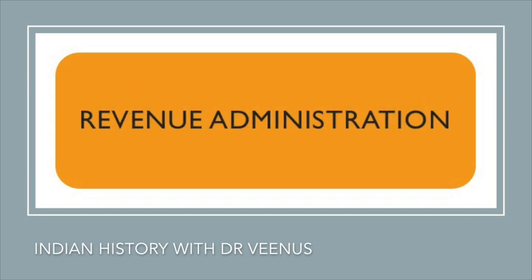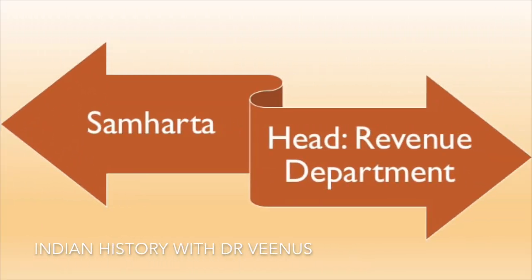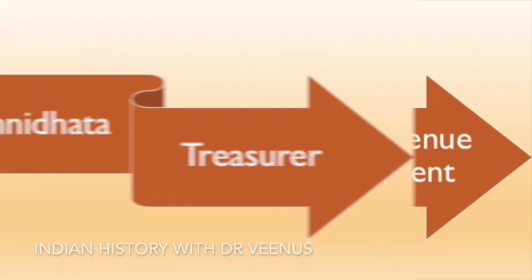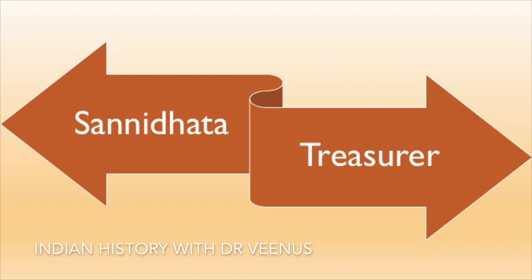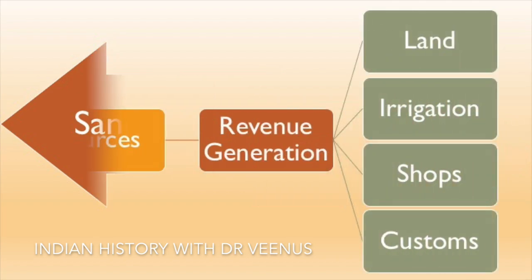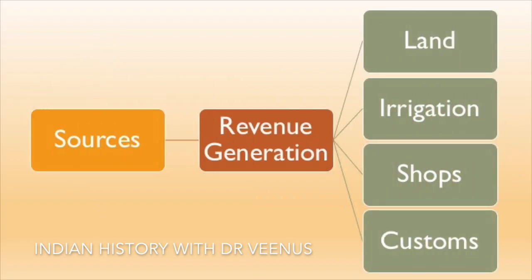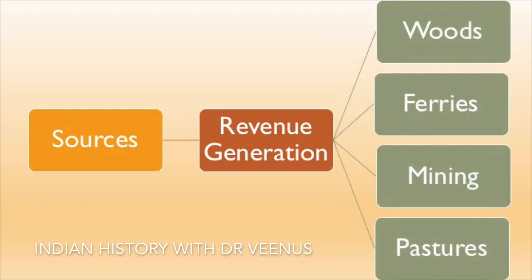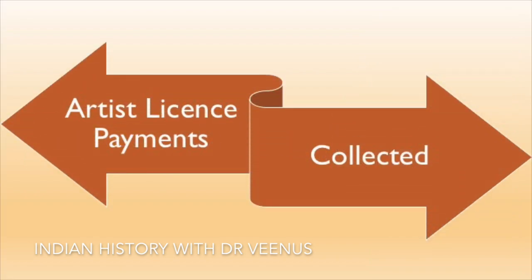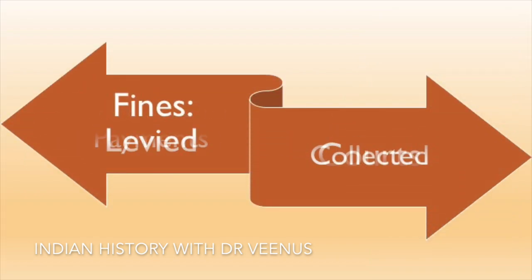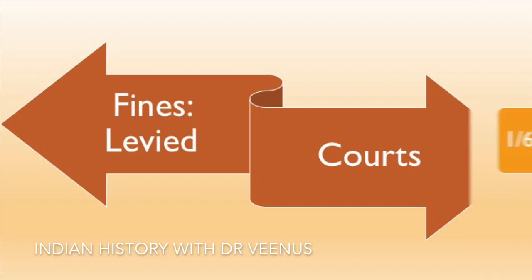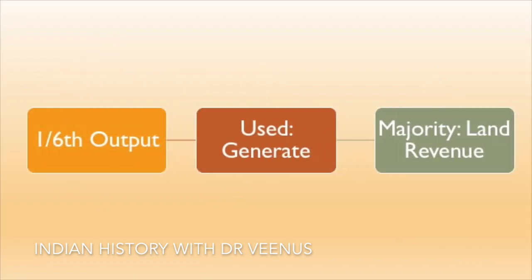Samharta was the head of the revenue department. Sannidata was another significant official who was the treasurer. Land, irrigation, shops, customs, woods, ferries, mining and pastures all generated revenue. Artists' license payments were collected and fines were levied in the courts. One-sixth of the produce was used to generate the majority of the land revenue.